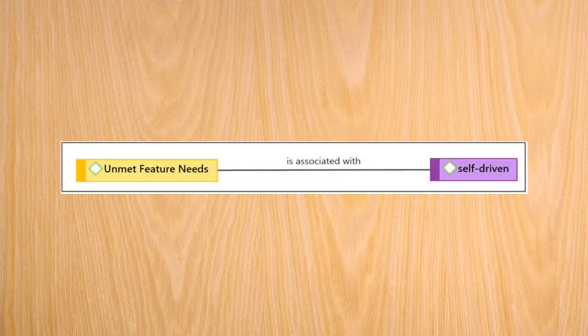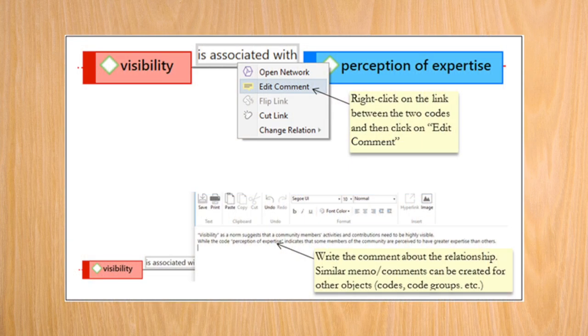Similarly, look at the codes unmet feature and self drive. One can suggest that because the developer needed many of the missing features for effectively using the software, unmet feature needs may have contributed to the developer's self drive. Hence, I am going to connect these two codes with an association relationship. In this fashion, you can go ahead and create additional links. In these examples, the important point to note is the tight coupling between the relationships and the explanation. Researchers usually detail the explanations using memos or comments. For instance, here is how a memo for the relationship between visibility and perception of expertise may look like.